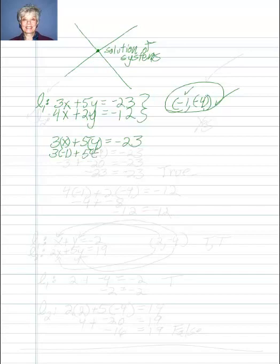...is negative 23, and I need to find out is that true or false. So let's see, negative 3 plus negative 20, does that equal negative 23? You bet it does. Negative 23 equals negative 23. This is a true statement.